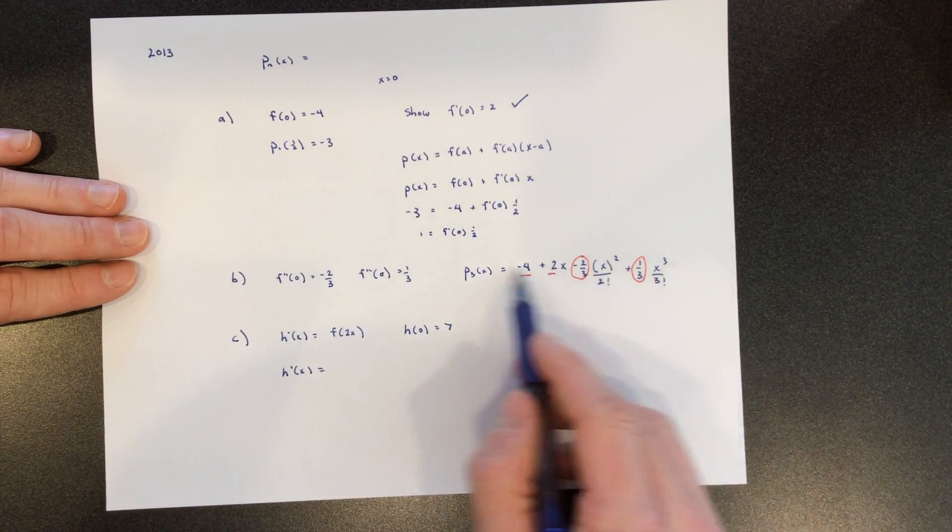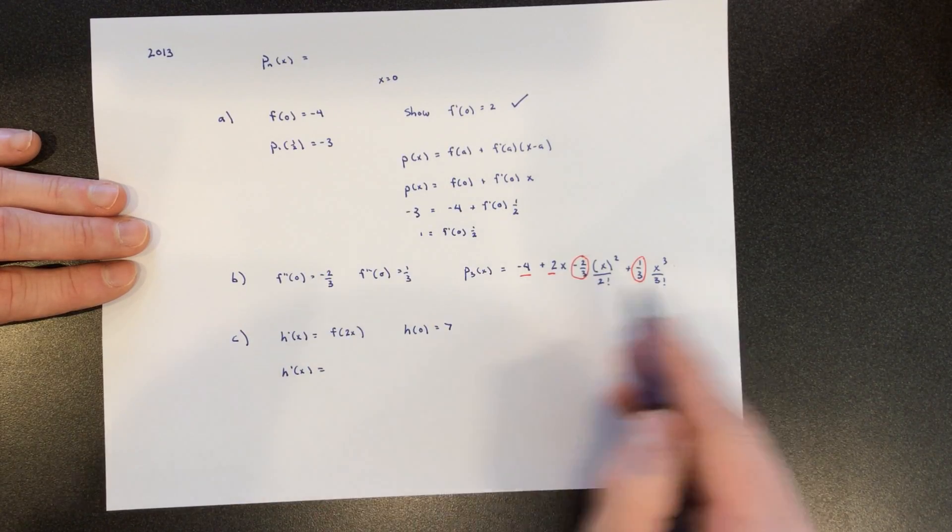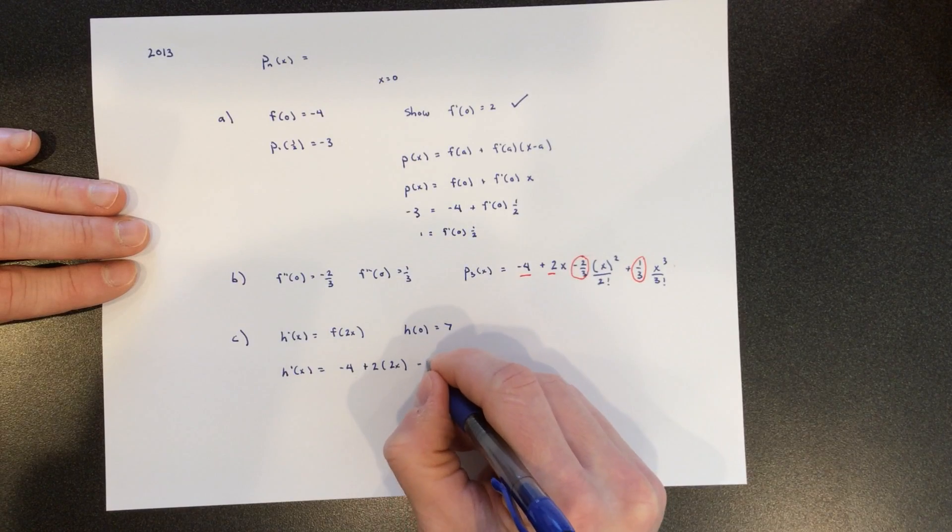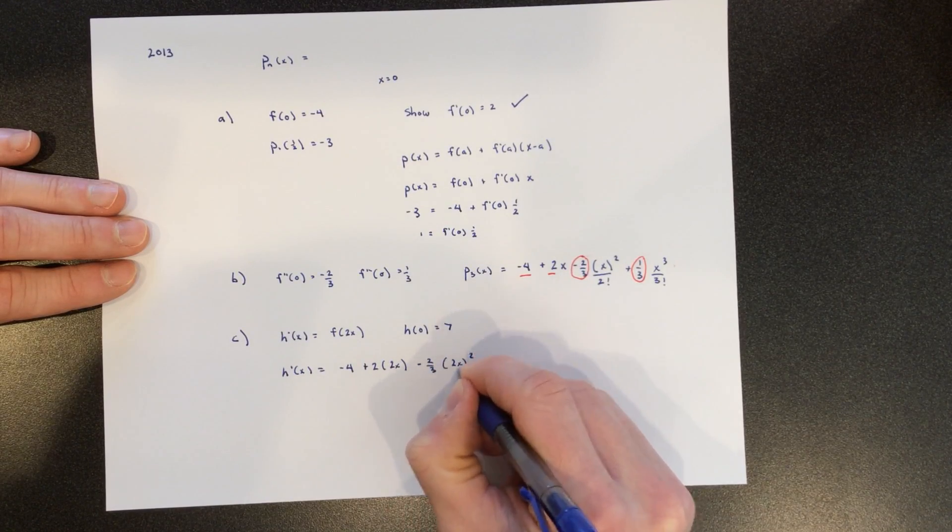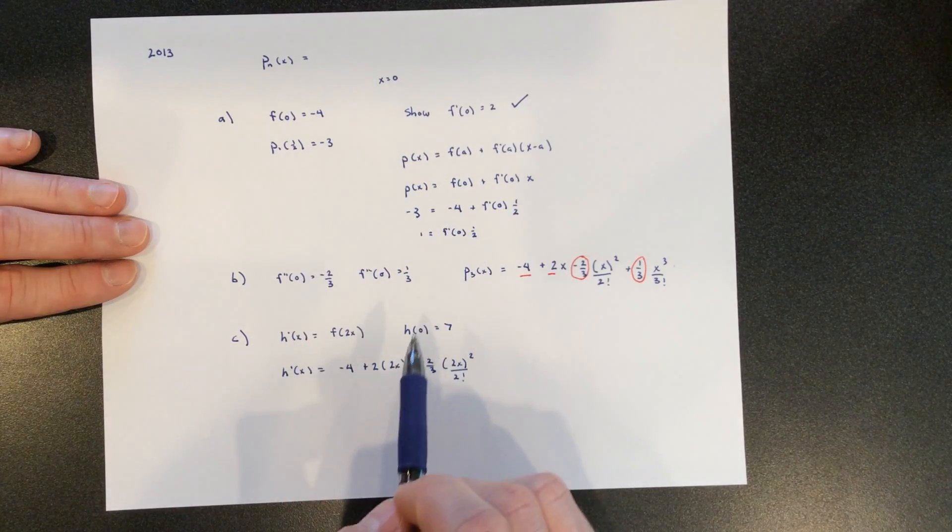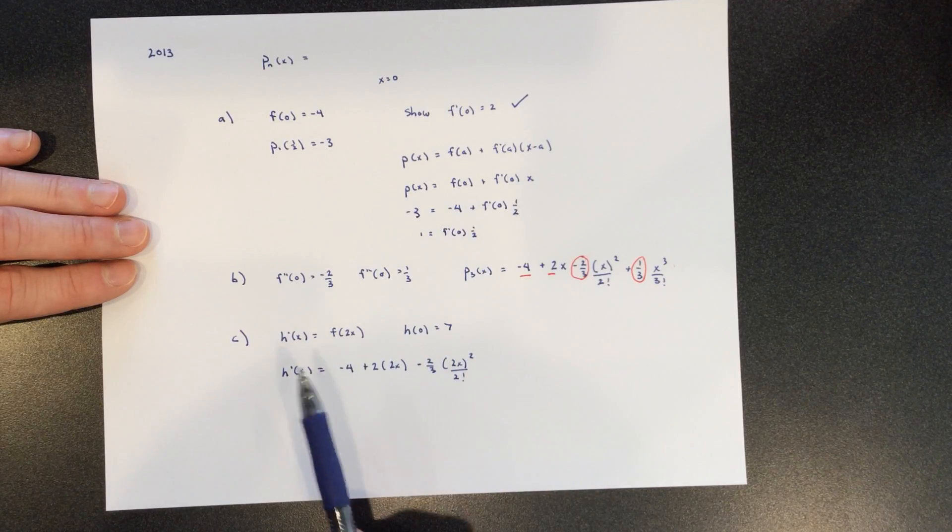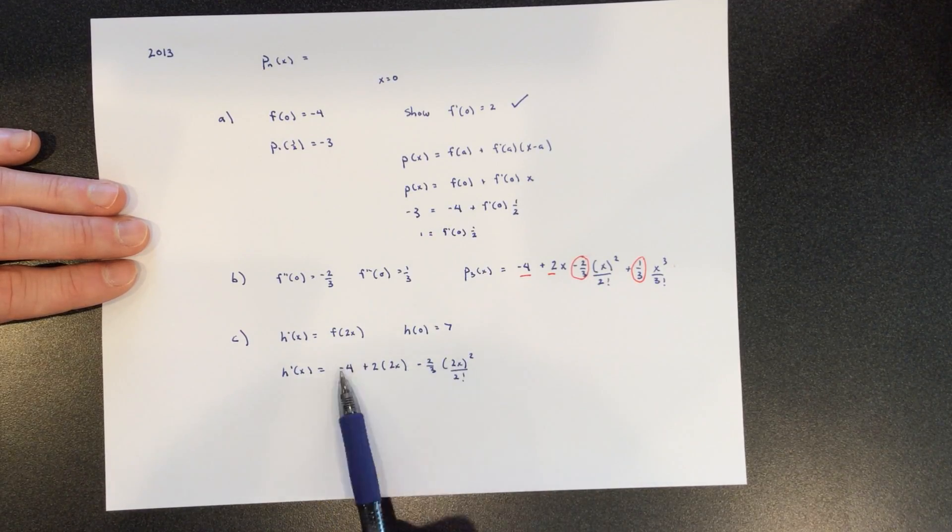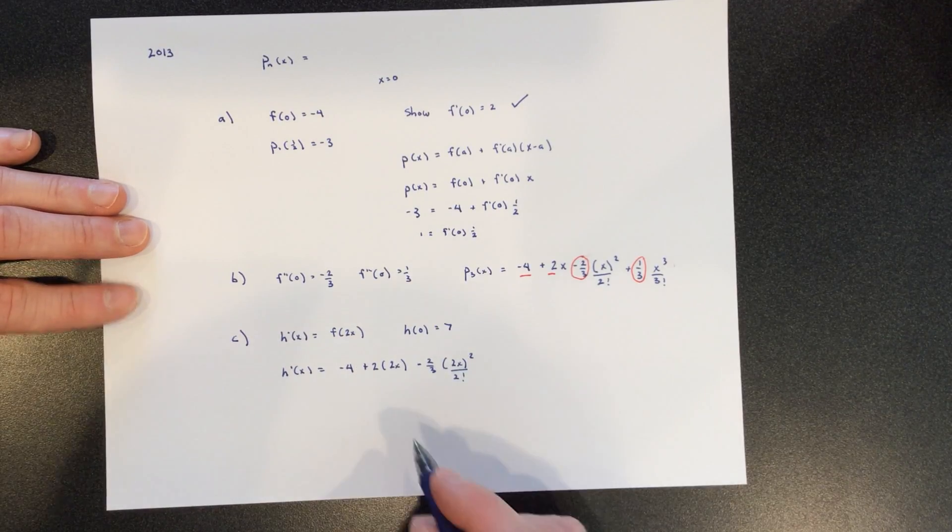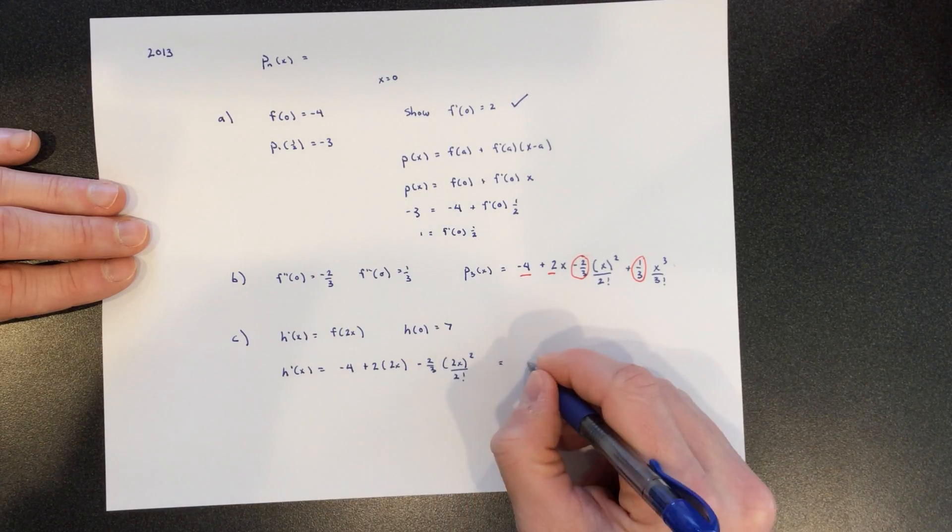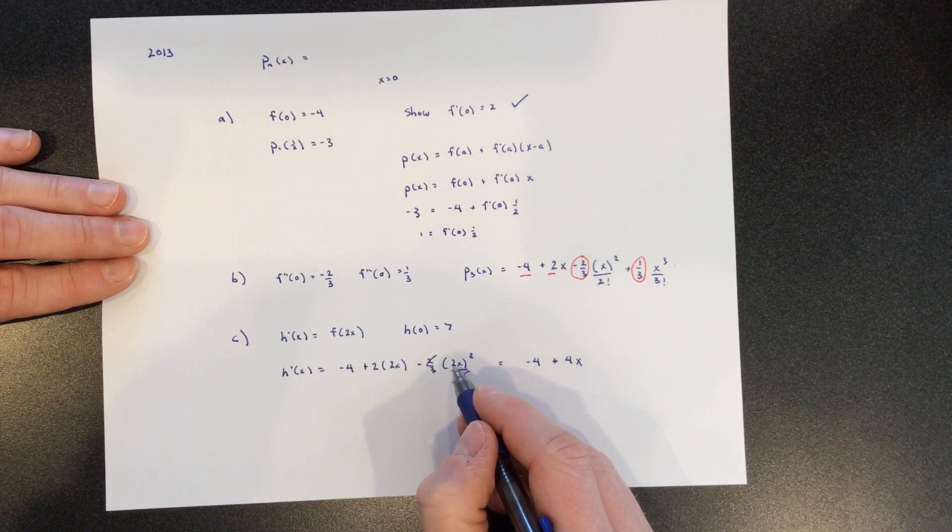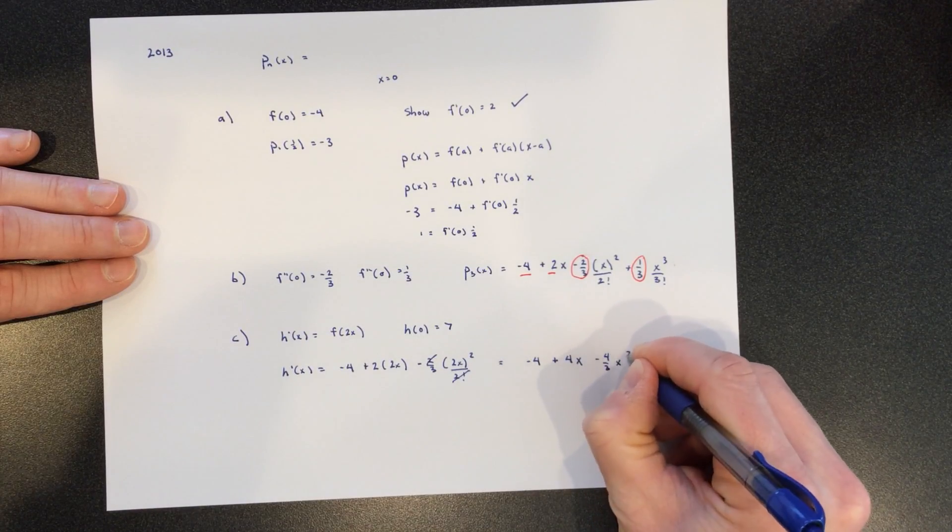Here's F right here. That's the third degree polynomial for F. Let's just plug in a 2x in everywhere. So you get negative 4 plus 2 times 2x. And then this is going to be a negative 2 thirds 2x squared over that. The question says find the third degree Taylor polynomial for H. If you know you're going to find H by integrating H prime, you can stop here because a quadratic H prime will turn into a cubic H. Let's cancel a little bit here and rewrite this. So this is negative 4 plus 4x. 2 and 2 factorial are the same, and that's 4x squared over there. So that's minus 4 thirds x squared. So that's H prime.